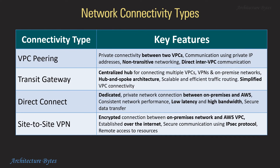Network connectivity types and their key features: VPC Peering is a private connection between two VPCs. Transit Gateway is a centralized hub for connecting multiple VPCs, VPNs, and on-premise networks with a hub-and-spoke architecture. Direct Connect is a dedicated private network connection between on-premises and AWS Cloud, providing low latency and high bandwidth. Site-to-site VPN is an encrypted connection between an on-premises network and AWS VPC established over the Internet, providing secure communication using IPSec protocol.